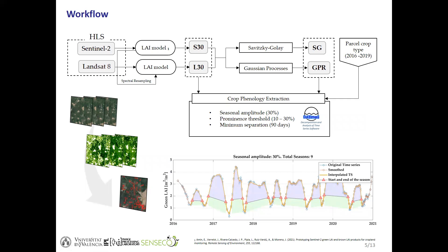Here you can see the main workflow. Each time series collection was separately processed for Green-LAI retrieval applying a Dupler model originally developed for Sentinel-2. Given that Landsat 8 and Sentinel-2 make similar spectral and spatial measurements, the model was resampled to the spectral configuration of Landsat and applied to that collection. For combining both single-sensor Green-LAI time series, we applied two methods: the Savitzky-Golay smoothing filter based on a moving average window, and Gaussian processes, a machine learning technique which performs temporal gap-filling interpolation.